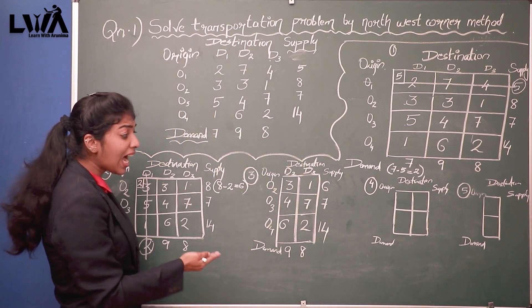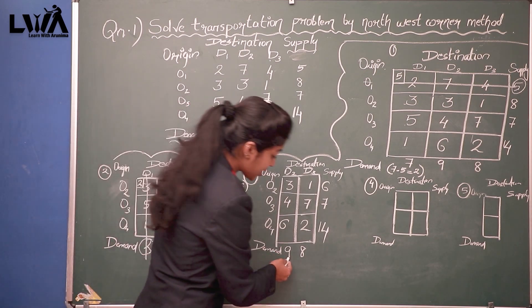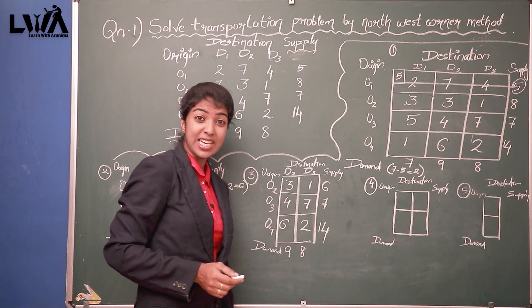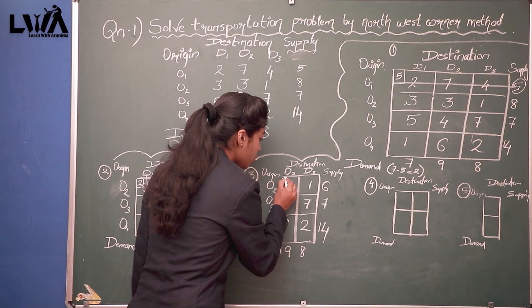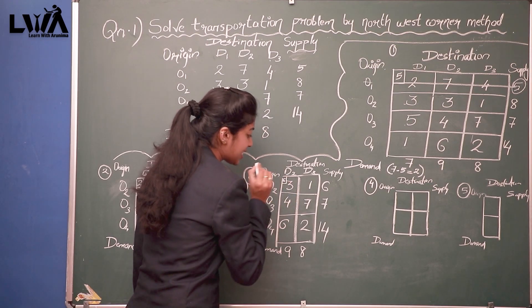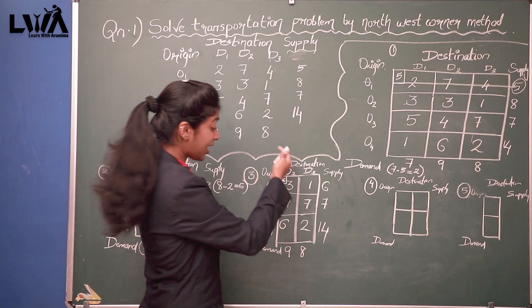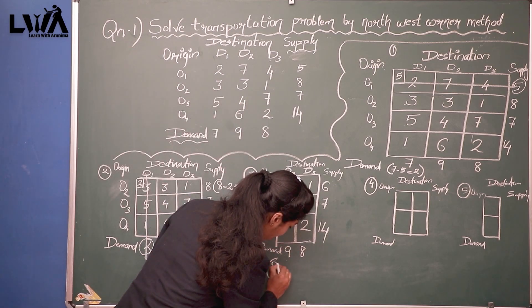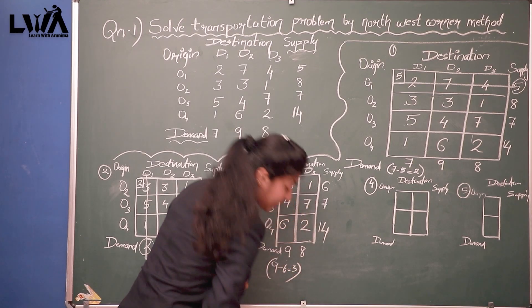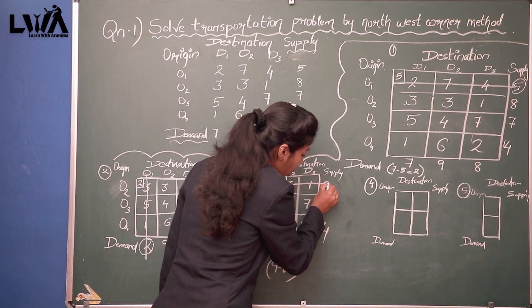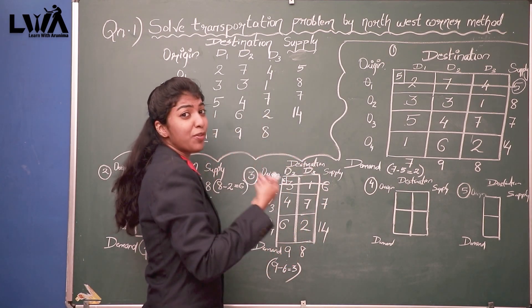Again, the problem is repeated. Looking at 9, 8, 14, 7, 6 — which is the least one? Yes, 6 is the least. So 6 is taken to the North West corner. From the concerned column: 9 minus 6 equals 3. This particular row is exhausted.